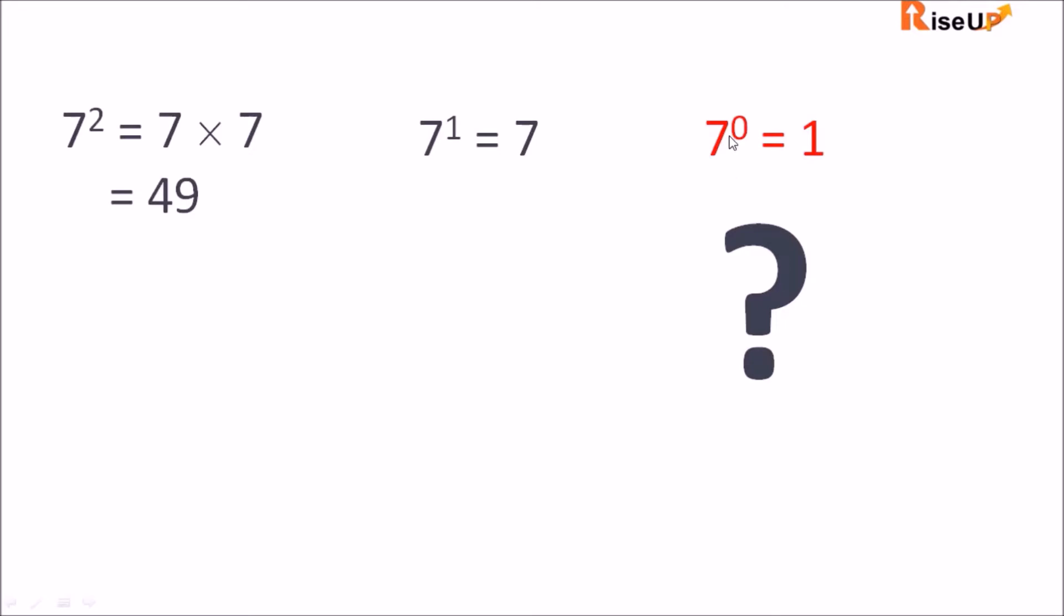Any number raised to power 0 equals 1. Why? I know there's a big question in your mind. Let's try to understand this.